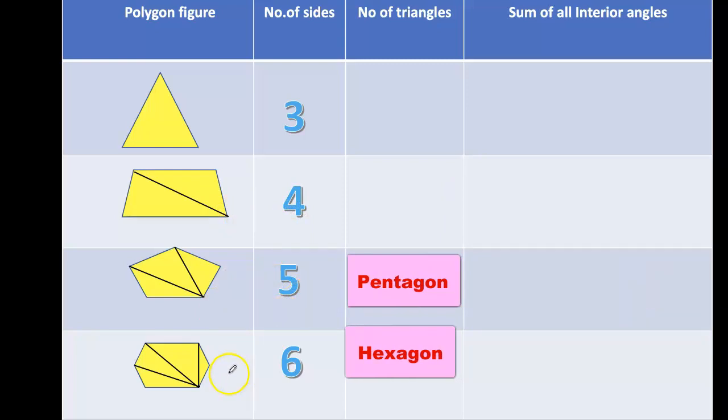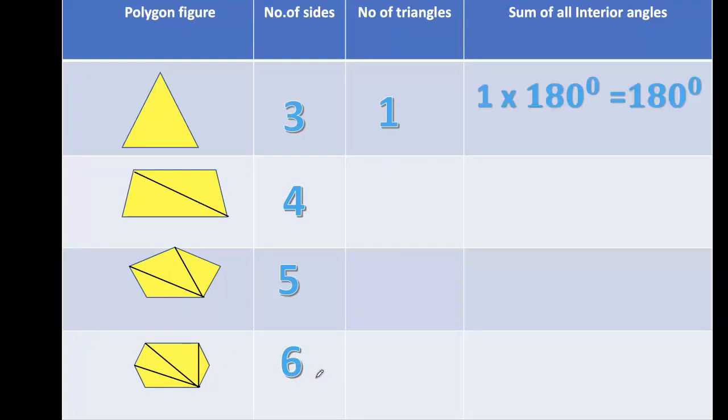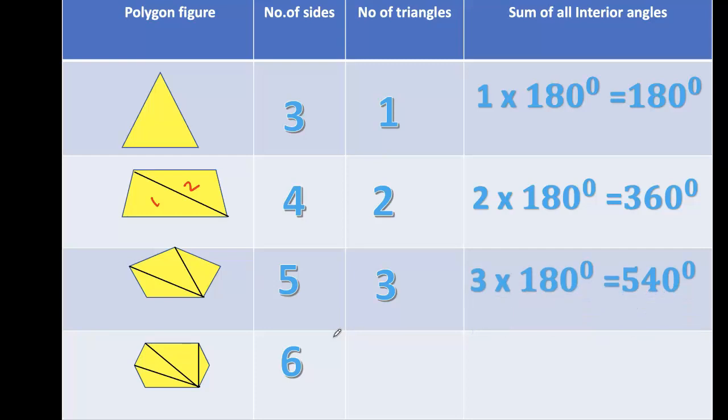Hexagon: number of sides is six. Triangle sum of all interior angles is 180 degrees. In case of quadrilateral, there are two triangles, so 2 × 180 = 360 degrees. Pentagon has three triangles, 3 × 180, sum will be 540 degrees. And hexagon has four triangles, so 4 × 180 = 720 degrees.